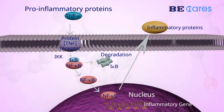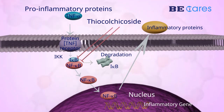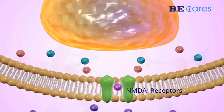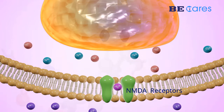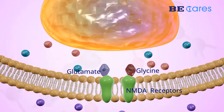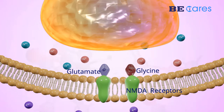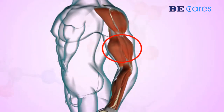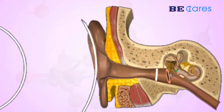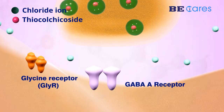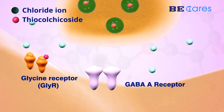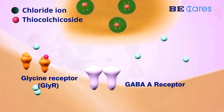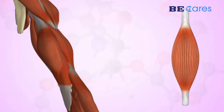Thiocolchicoside also works as an anti-inflammatory agent by modulating the NF-κB pathway. Glycine is an inhibitory neurotransmitter that regulates the NMDA and methyl-D-aspartate receptors. It is involved in processing motor and sensory data. Acting on the inhibitory glycine receptors, thiocolchicoside brings about muscle relaxation.